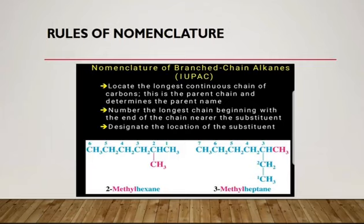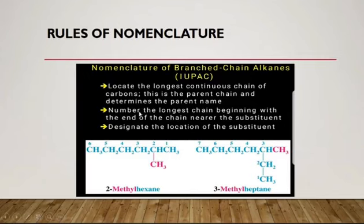The rules of nomenclature for branched-chain alkanes according to IUPAC are: first, locate the longest continuous chain of carbons — this is the parent chain. Second, number the longest chain beginning from the end nearest to the substituent. Third, designate the location of the substituent by labeling or positioning that branch in the name.